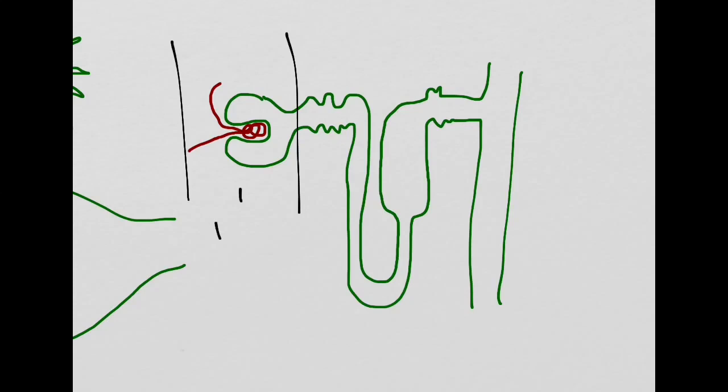First, let's look at this nephron and break it down. The first section is the renal corpuscle, where the filtration will occur. The second section is the renal tubule, and this is where the bulk of the absorption occurs, but also some secretion occurs here.